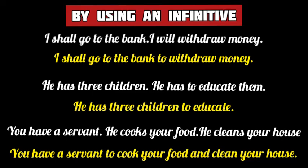He has three children to educate. In the last example, we have three simple sentences: 'You have a servant,' 'He cooks your food,' 'He cleans your house.' The second and third sentences indicate your purposes of having a servant. So we may join these three separate simple sentences by using two infinitives in place of the second and third sentences: You have a servant to cook your food and clean your house.